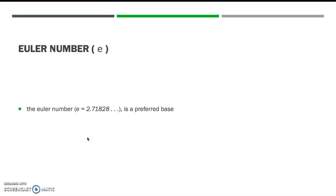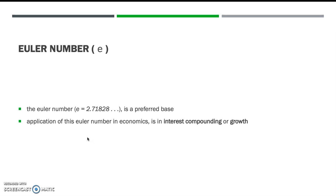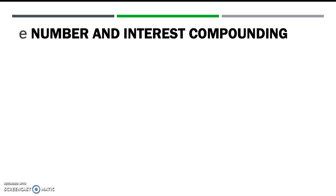The Euler number, or the number e, equals 2.71828, and is a preferred base for an exponential function. It offers convenience when dealing with the derivative of an exponential function. Another application of the Euler number in economics is interest compounding and the concept of growth. Let's discuss about the application of the Euler number in interest compounding.